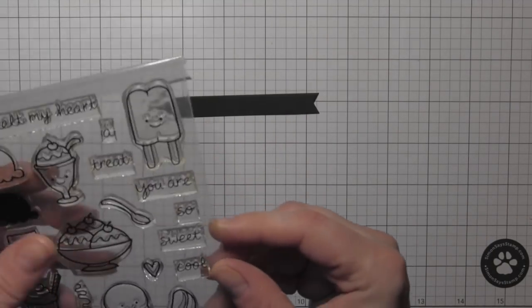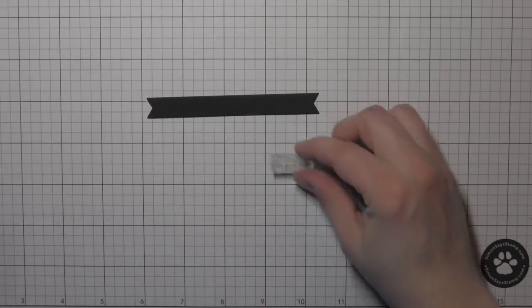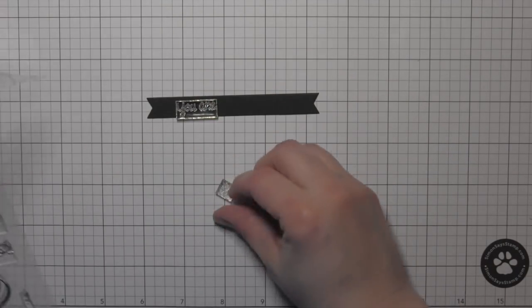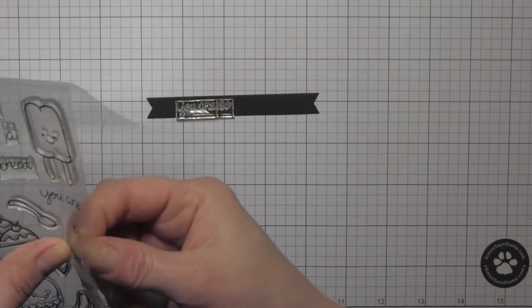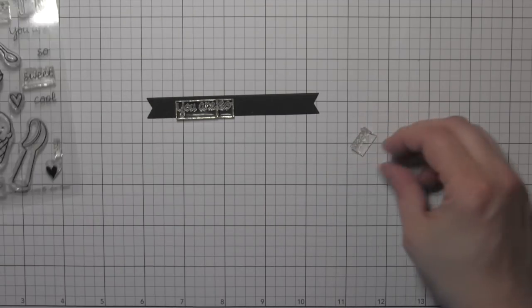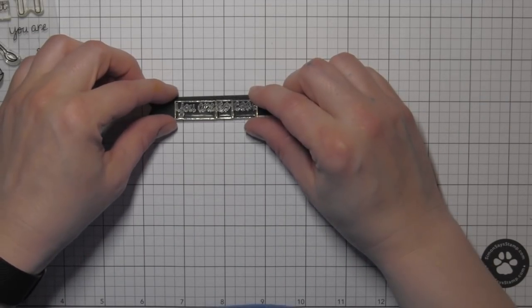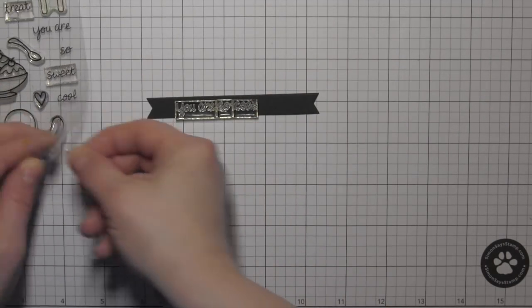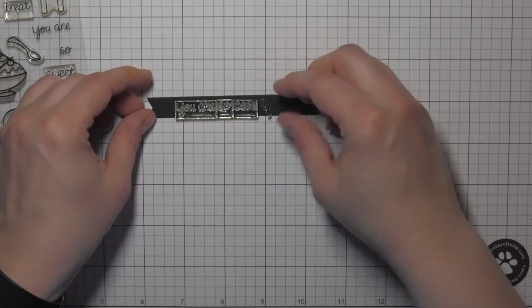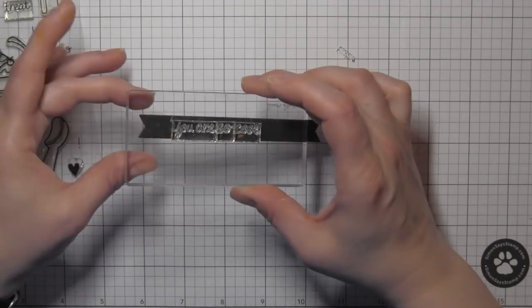Run that over the surface of the banner, and then I'm going to stamp a greeting from Here's the Scoop stamp set that says you are so cool. And this is a great stamp, this whole stamp set you can mix and match the greetings to make it say exactly what you want. I'm going to pick up my stamps there with an acrylic block, place my exclamation point right there.